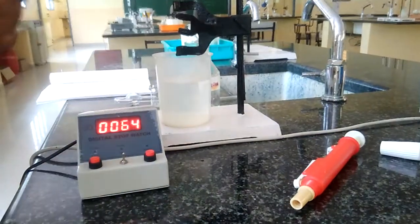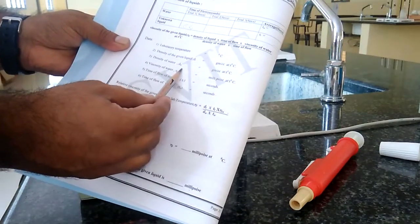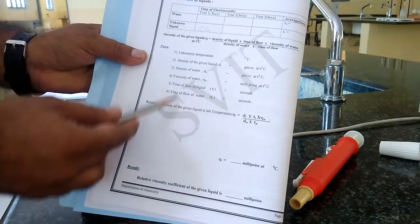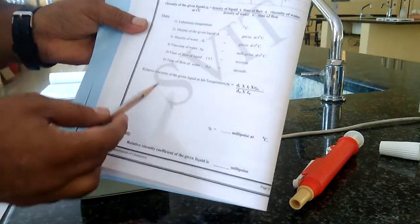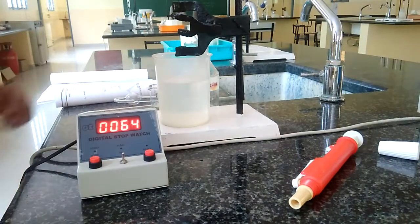For this, we need lab temperature, density of the given liquid, and density of water. Viscosity of water also—these four things are given data. With help of this given data, we are going to calculate the viscosity coefficient of the organic liquid. Thank you.